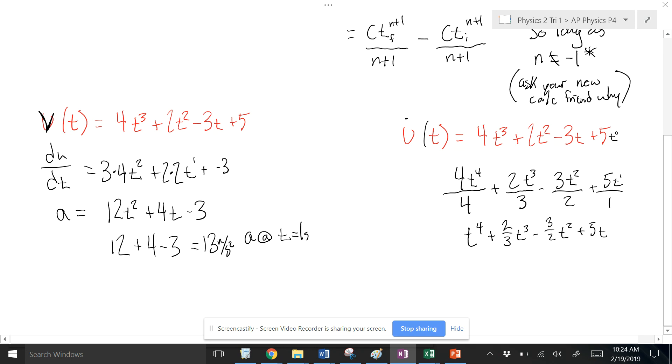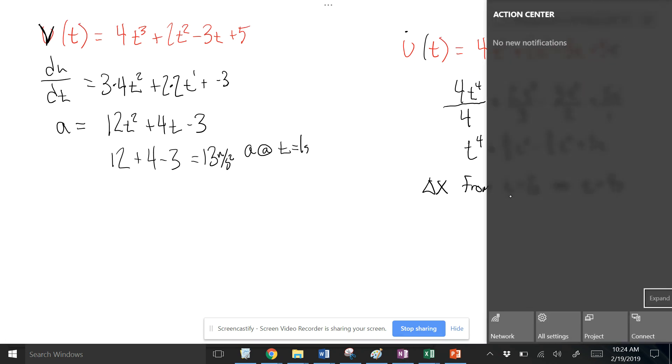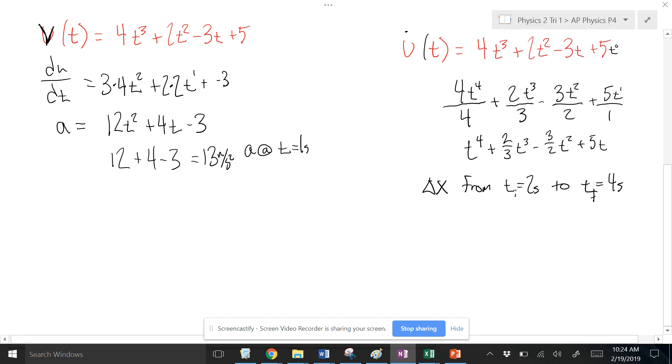Let's say between, it wants to know, change in x maybe from t equals 2 seconds to t equals 4 seconds. So then we would put in those values. This is ti, this is tf. So I'm going to do 4 to the 4th plus 2/3 times 4 to the 3rd minus 3/2 times 4 squared plus 5 times 4. So I'm going to get that value.